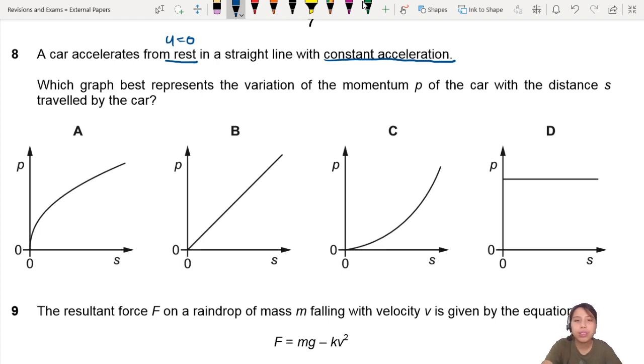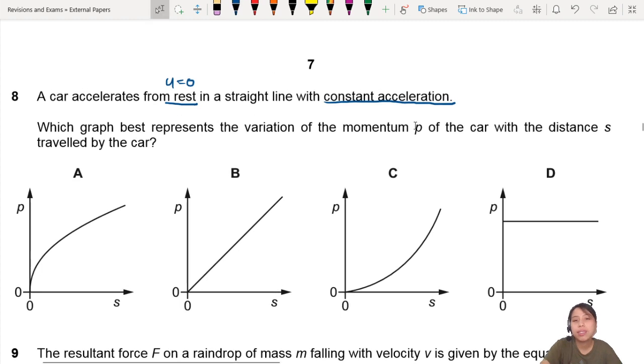Now my first instinct when I saw this question was to think of Newton's second law. Constant acceleration means force, change in momentum over change in time. Now I could find this easily, but the problem is, notice what's on the x-axis of all the answers. S, S, S. It's not in terms of time, so I can't use this equation. Sad.